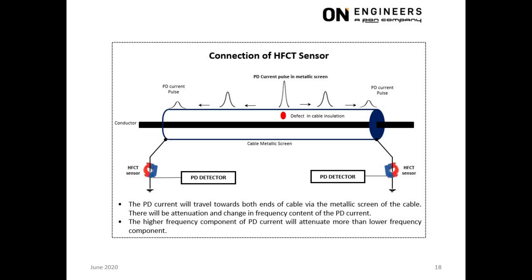As PD current propagates, there is attenuation and a change in frequency content of the PD signal. The higher frequency component will be more attenuated than the lower frequency component. This explains the lower frequency response of the HFCT at 100 kHz to 30 MHz.